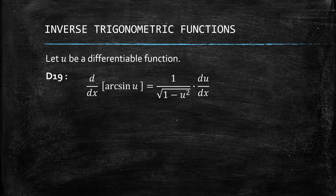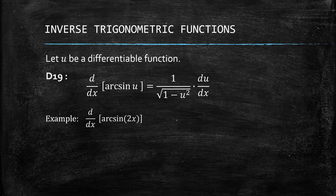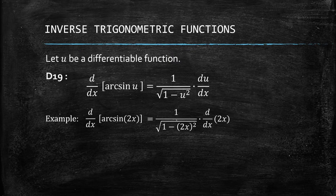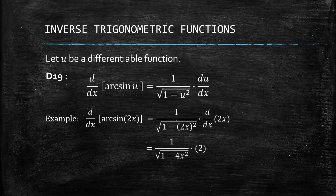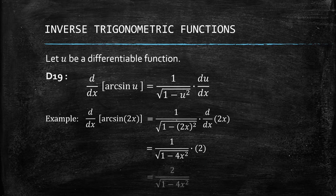So for arcsin of u, the derivative is 1 over the square root of 1 minus u squared, times du/dx. Let's have an example: arcsin of 2x. We simply use the formula — 1 over the square root of 1 minus (2x) squared — then get the derivative of u. Since u is 2x, the derivative is 2. So we have 2 over the square root of 1 minus 4x squared after simplifying. That's D19.